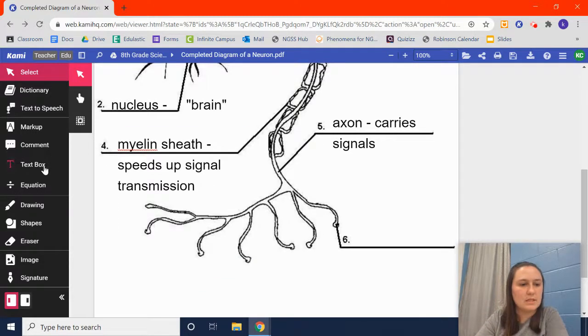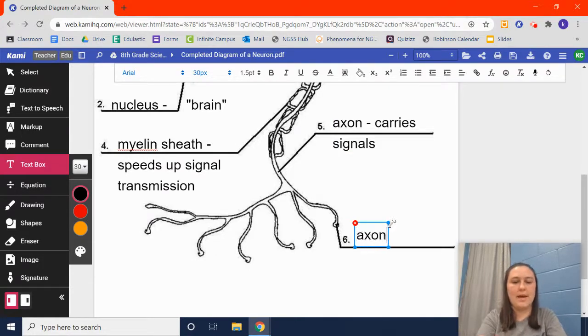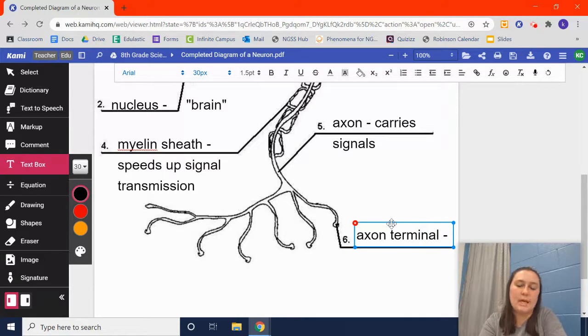Number six, that is called, and really it's the end of the axon. It's called the axon terminal. And at the beginning the dendrites receive the signal, the axon terminal is going to send out the signal.